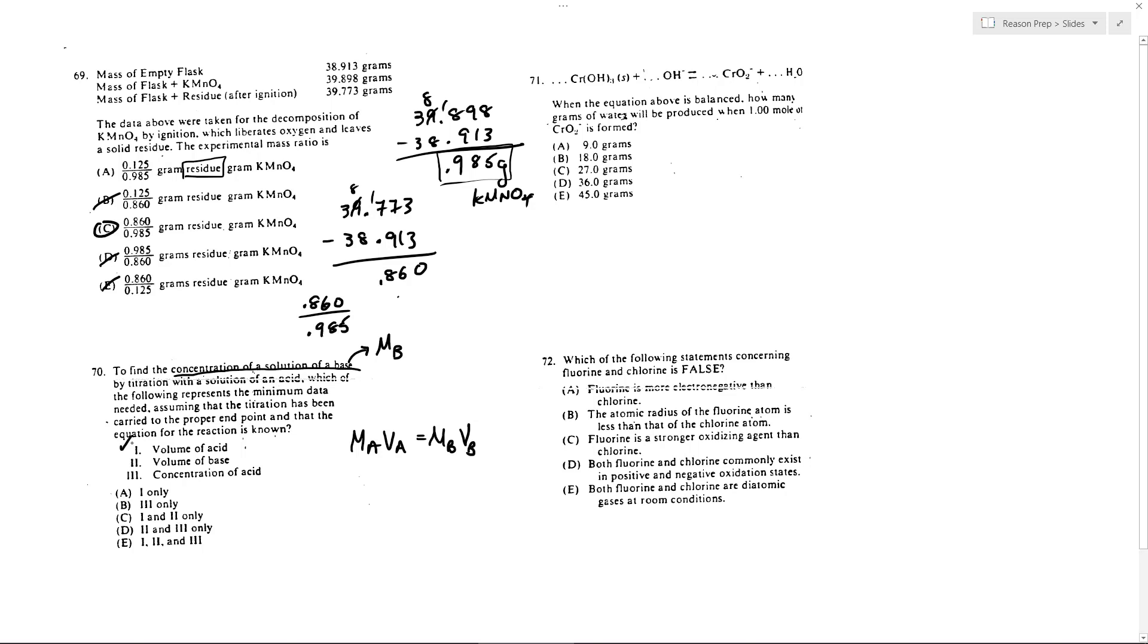And so we need all of these. This is our V-A, this is our V-B, and our M-A. And so therefore, the answer is all three. Choice E.